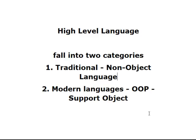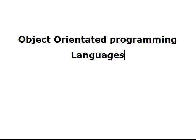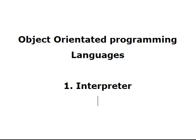Now the modern languages — those object-oriented programming languages — can also be divided into two further categories. Object-oriented programming languages can be divided into: one, interpreter, and secondly, you have a compiler.